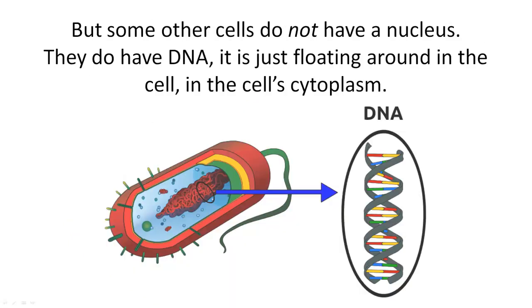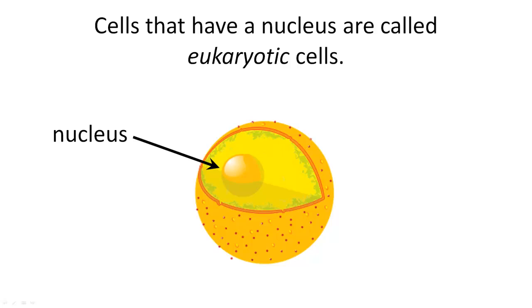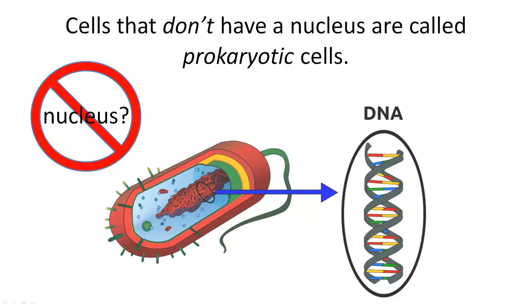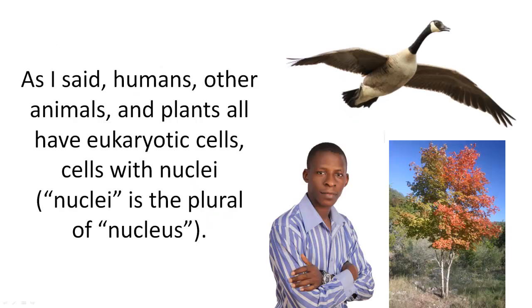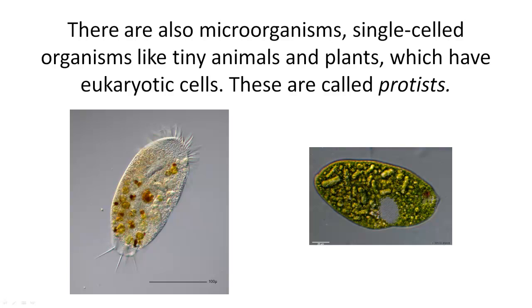But some other cells do not have a nucleus. They do have DNA — it's just floating around in the cell, in the cell's cytoplasm. Cells that have a nucleus are called eukaryotic cells. Cells that don't have a nucleus are called prokaryotic cells. 'Euk' means they do; 'pro' means they don't. Humans, other animals, and plants all have eukaryotic cells — cells with nuclei. Nuclei is the plural of nucleus. There are also microorganisms — single-celled organisms like tiny animals and plants — which have eukaryotic cells. These are called protists.